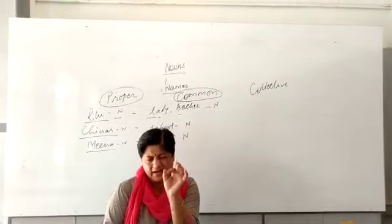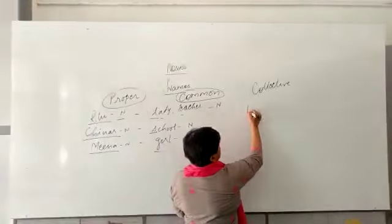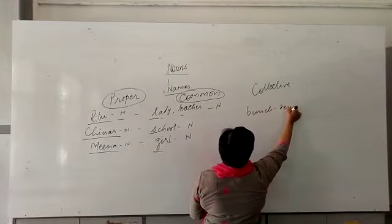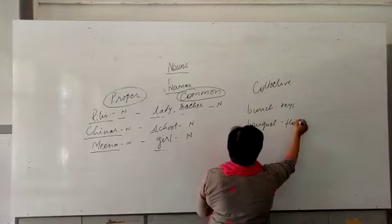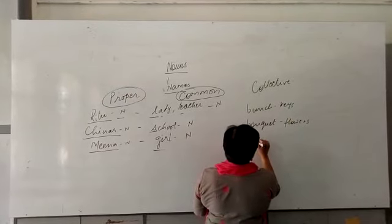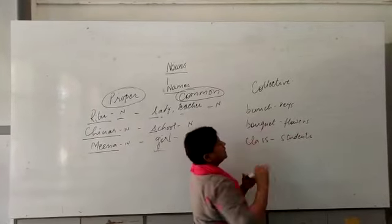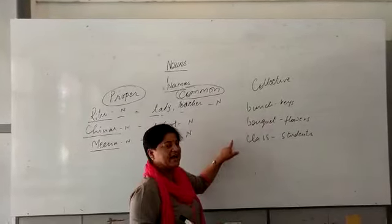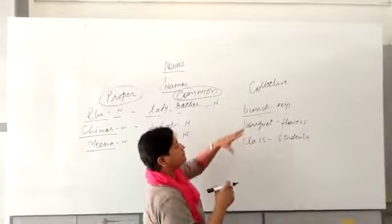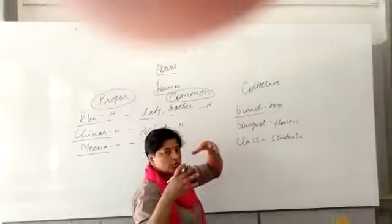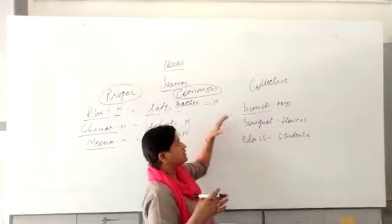What is collective noun? I know you all know what is collective noun. Collection of things. Like bunch of keys, a bouquet of flowers, a class of students. What is this? Bunch, bouquet, class. All these means group. A group of keys is called a bunch. A group of flowers is called a bouquet. A group of students called a class. So, this is a collective noun.